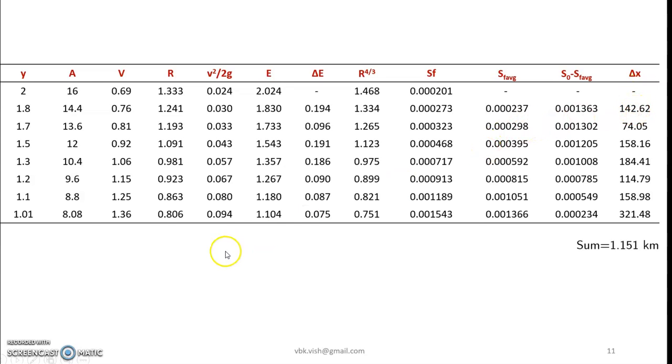Similar trials are performed till y equals to 1 meter. Now here it is restricted to y equals to 1.01. Now we have delta x values here. If we sum it up we get a total length. And the total length of the backwater profile or the M1 profile would be around 1,151 meters or 1.151 kilometers. Next we can draw the profile, a small representative diagram also. Thank you.